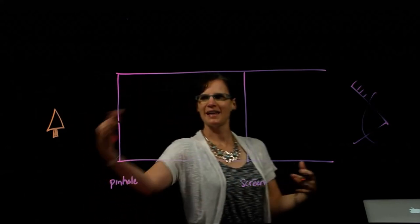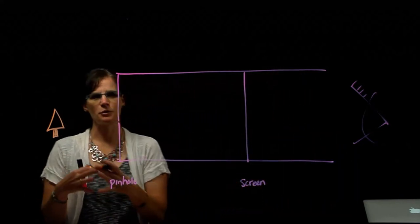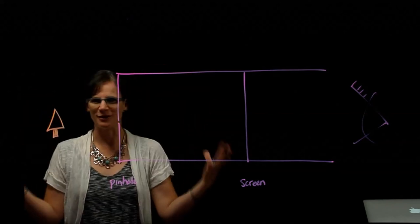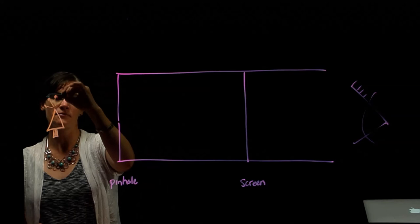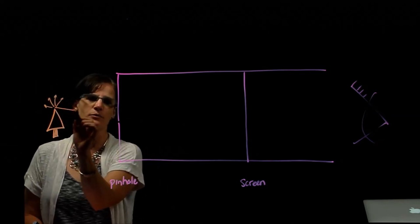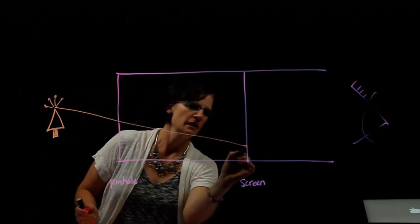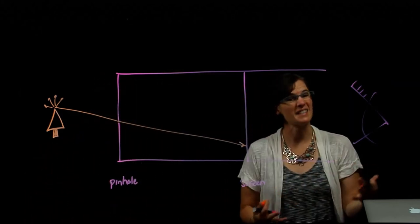How does the image of the tree get through the pinhole and onto that screen? If we think about the tree as producing its own light, sending light rays out in all directions and in straight lines, we know that the top of the tree is doing that. One of those rays of light will make it through the pinhole and hit the screen. That ray of light represents the top of the tree.